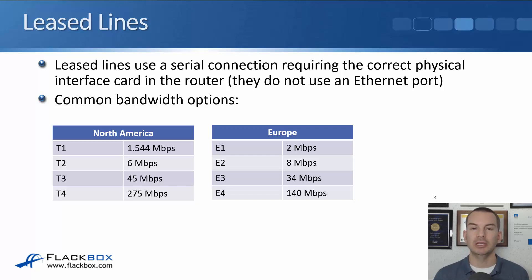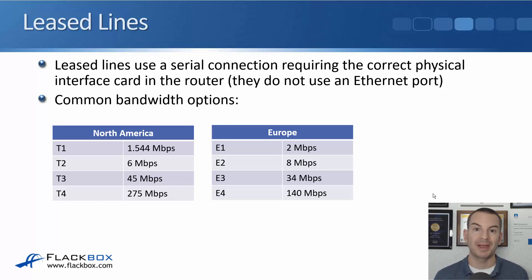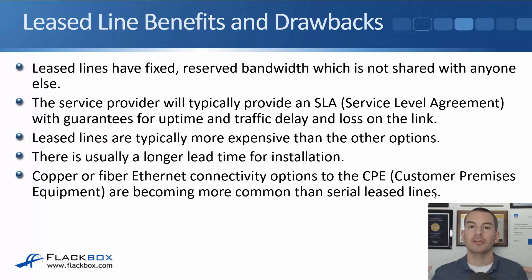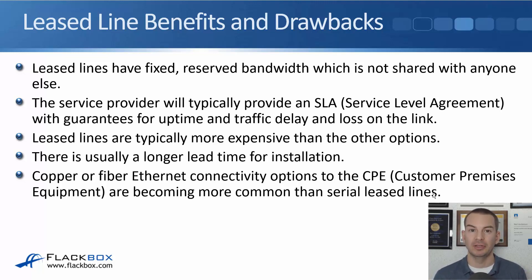There are also T3, T4, E3, and E4 for even higher bandwidths. Further back in the past, slower options like 64K, 128, 256, or 512 kilobits per second were common. There are lots of different bandwidth options for leased lines, and obviously the higher the bandwidth, the more expensive it's going to be. The big benefit of leased lines is fixed reserved bandwidth not shared with anyone else. Because of this, the service provider can give you a service level agreement with guarantees for uptime, traffic delay, and loss — but you have to pay for that level of service, so leased lines are typically more expensive than other options.